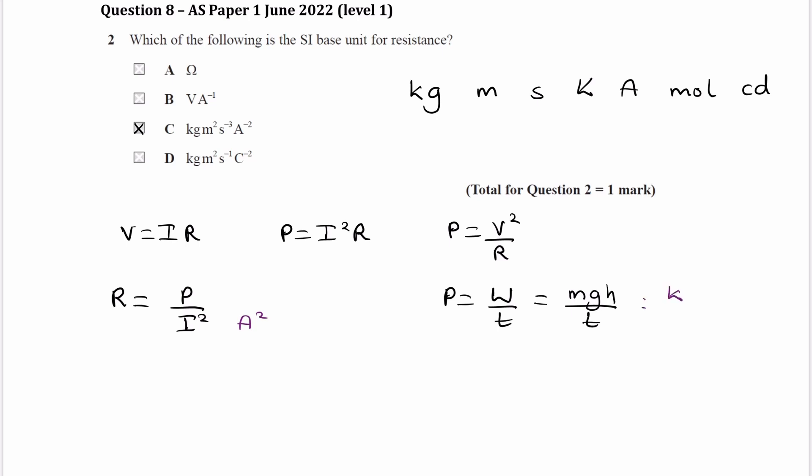So mass is kilograms. G is then meters, it's acceleration, so it would be meters per second squared. It's acceleration due to gravity. H is height, so that's meters. And then all of that is divided by seconds. And when we simplify that, we end up with kilograms, meters squared, S to the minus 3.